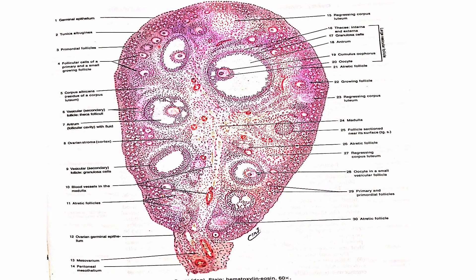On a cut section of the ovary as visualized under the microscope, we can see the outer cortex and the inner medulla. In the outer cortex, numerous primordial follicles are visible along with follicles at different stages of maturation. The hilum and medulla are also identifiable in this section.